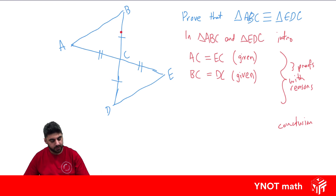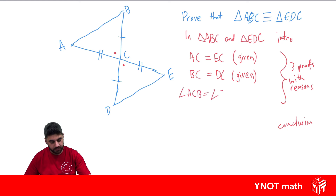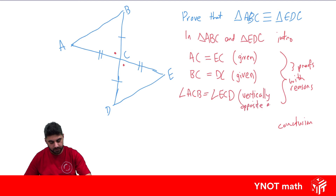Nothing else is given to us, but if we look closely, we have two lines that cross over each other, which means we have vertically opposite angles that are going to be equal. So we can say angle ACB equals angle ECD, and the reason is that vertically opposite angles are equal.